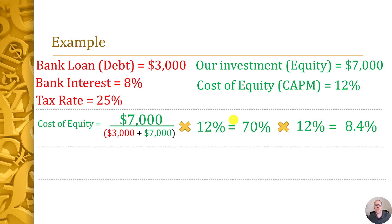If our company were 100% equity-funded, we wouldn't need to do any math — our cost of equity and our WACC would simply be 12%. But we're not 100% equity; we're 70% equity, so we also need to calculate the cost of debt.